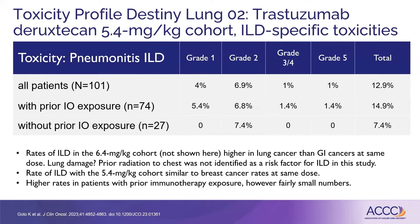Looking at the grading, we'll see mostly grade 2, which is symptomatic but manageable. But there was 1% to 2% grade 3 or 4, and even some grade 5 deaths. We know that rates were higher in the 6.4 milligram cohort, and that's why the 5.4 milligram cohort got approved. The rates of ILD in that cohort were very similar to the breast cancer rates at that same dose, so we do feel comfortable giving this dose.